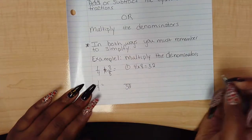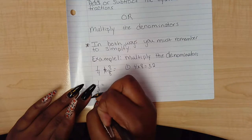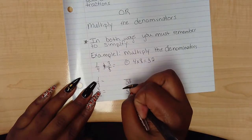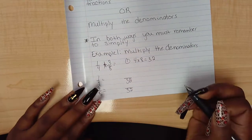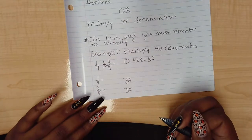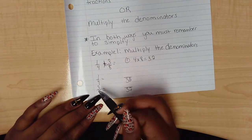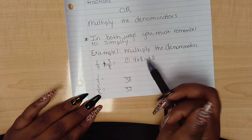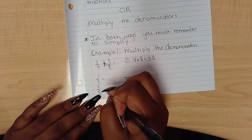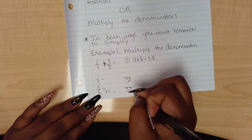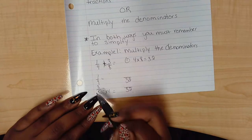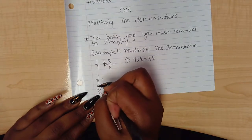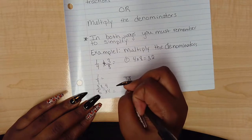So 3 eighths equals something over 32. I ask myself: 8 times what gives me 32? Since I multiplied 4 and 8 together, that means 8 times 4 equals 32. What I do to my denominator, I must do to my numerator. So I multiply my 3 by 4 — 3 times 4 is 12.